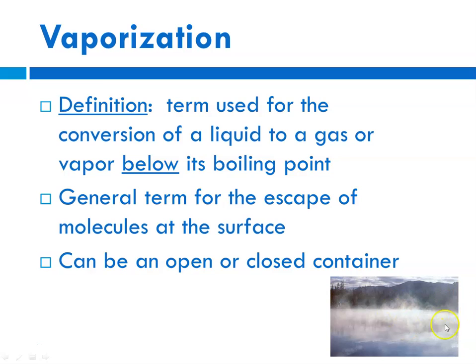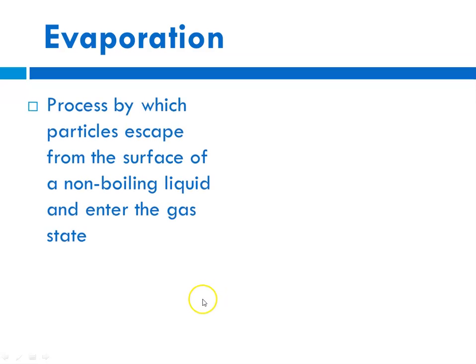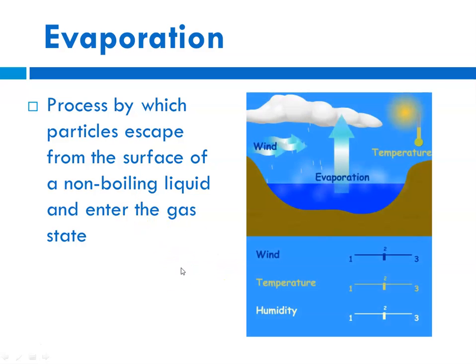Here you're seeing vaporization over what appears to be a pond. When we talk about vaporization at the surface only, we would talk about evaporation. When you see a puddle getting smaller and the water is evaporating, that is not a boiling liquid — anytime it's below the boiling point, it's called vaporization. Evaporation is more specific: it's the process by which particles escape from the surface of a non-boiling liquid and enter the gas state, taking place only at the surface. This is an example from the water cycle.